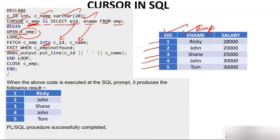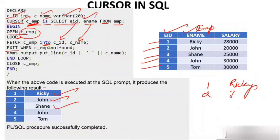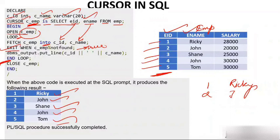In the first iteration you get 1 and Ricky; in the second, 2 and John, and so on — 4 John, 5 Tom. After all rows are retrieved, the EXIT WHEN CIMP%NOTFOUND condition becomes true and you exit the loop. Outside the loop, you close the cursor CIMP. After that, PLSQL procedure successfully completed.